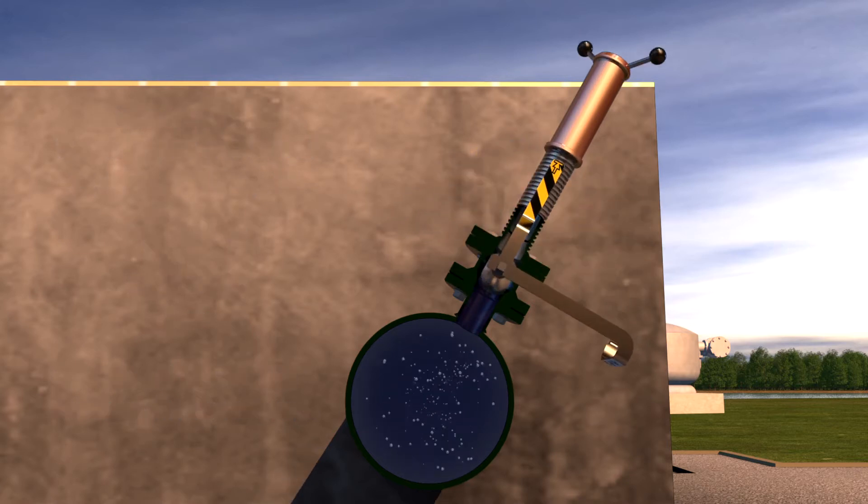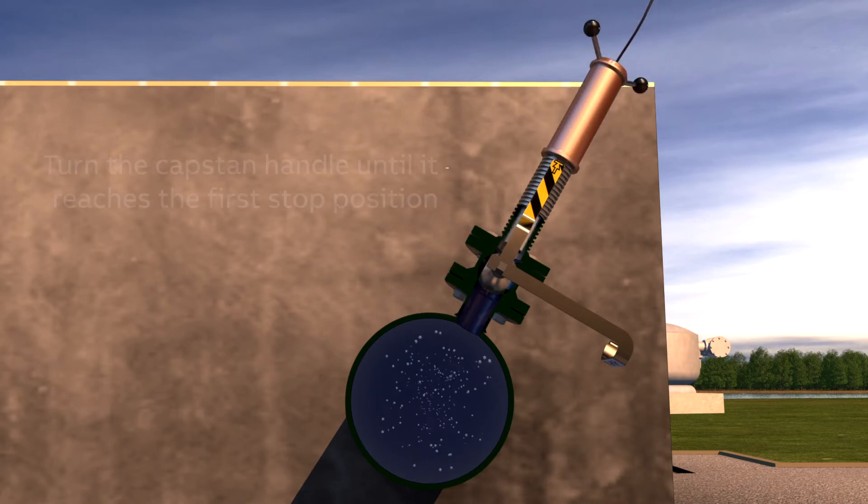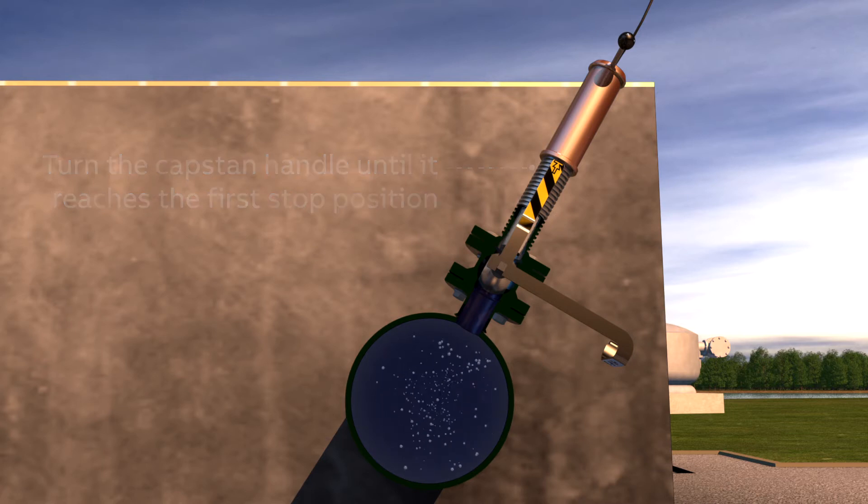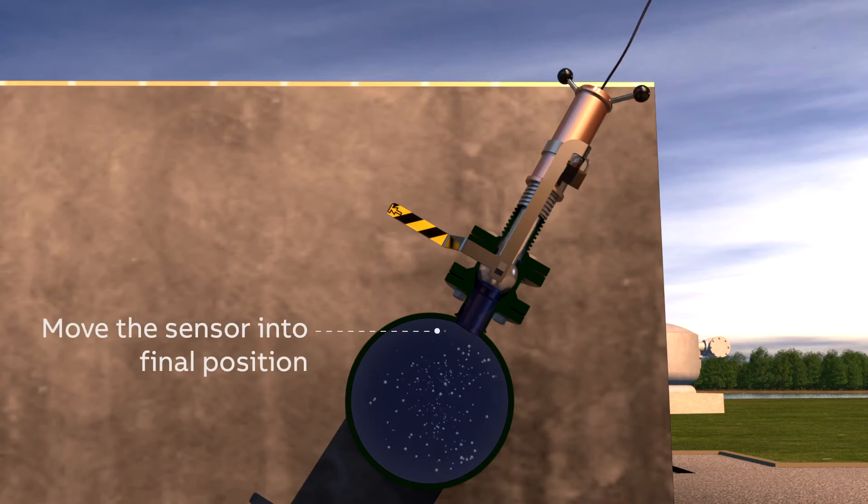Using the assembly is simple. After the sensor has been fitted into the assembly, it is inserted by turning the capstan handle until it reaches the first stop position. The ball valve can then be opened and the sensor inserted into its final position.